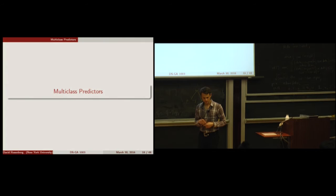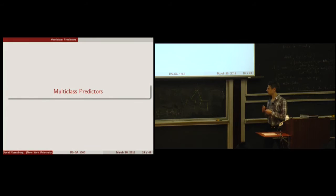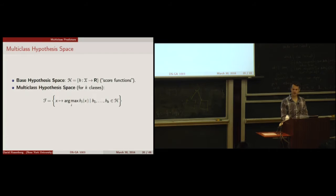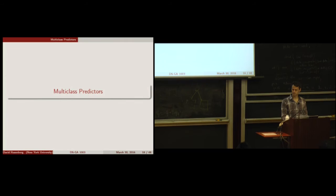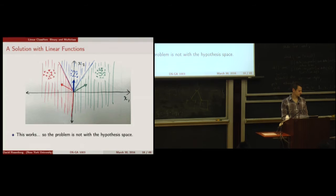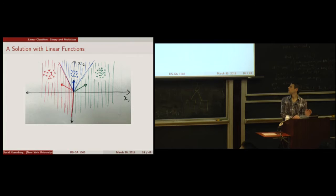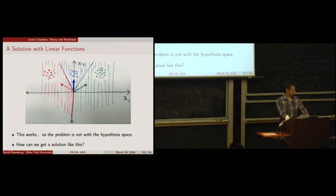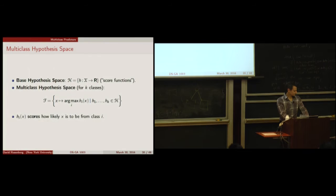The inner product W transpose X is negative when the angle between X and W is more than 90 degrees. So down there, for vectors that are more than 90 degrees apart from W, the inner product is negative. In that region below, all scores are negative, but we predict with the highest score — it doesn't matter if it's positive or negative.